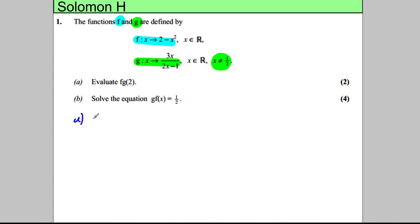For part a, obviously start by working out g of 2. That's when you substitute 2 in here, so 3 times 2 divided by 2 times 2 take away 1. 3 times 2 is 6, and that will be 6 divided by 3, which is obviously 2. So g of 2 is 2.